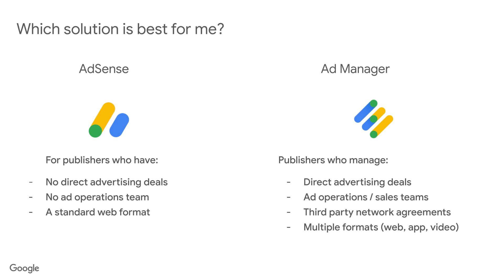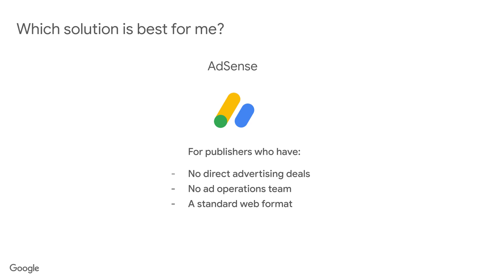AdSense is an automated solution for publishers to monetize their websites and can scale for publishers with tens of millions of page views per month. While available to all, AdSense is popular with small to medium-sized businesses because of its off-the-shelf automated product features. We recommend AdSense for publishers who do not plan on leveraging direct advertising deals, do not have an ad operations team, and who have a standard web format. AdSense is the perfect monetization solution if you are looking for Google to do the work for you.